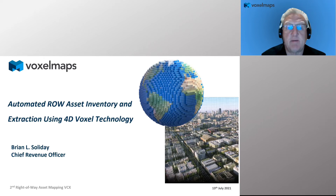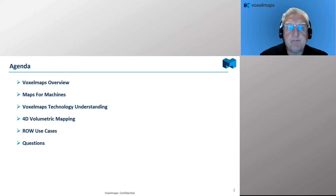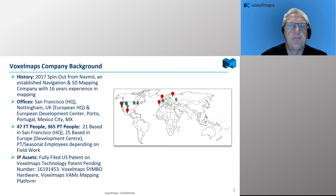Welcome everybody. I appreciate your participation in the second right-of-way asset mapping exchange. Today I'm going to talk about right-of-way asset inventory and extraction using 4D voxel technology. I'll give a brief overview of VoxelMaps, talk about the concept of maps for machines, go deeper into the technology, discuss 4D volumetric mapping, address a number of right-of-way use cases, and then open it up for questions.